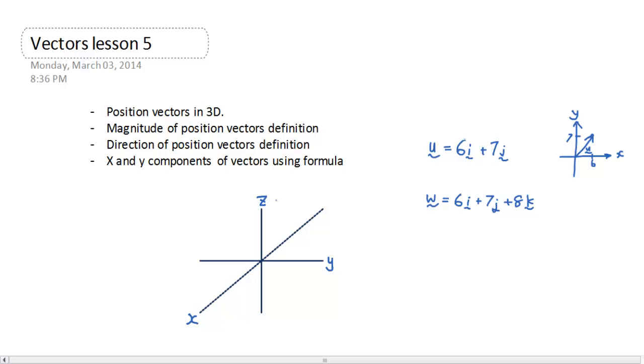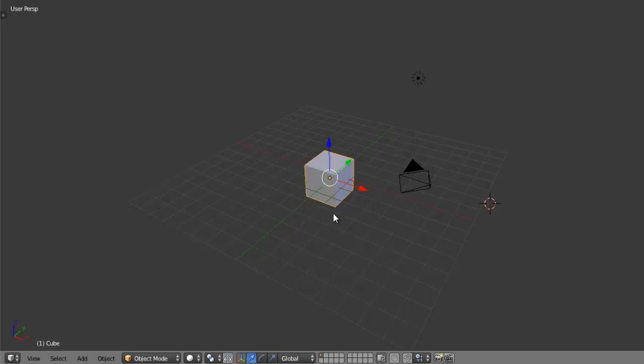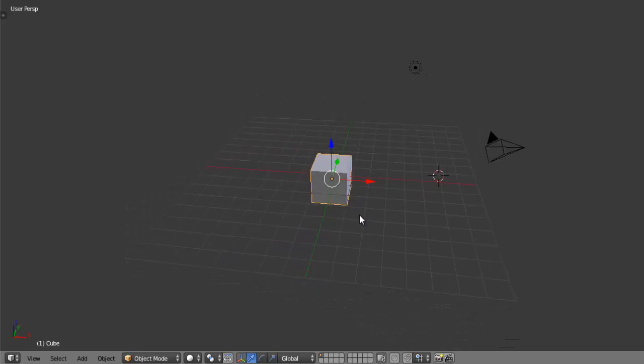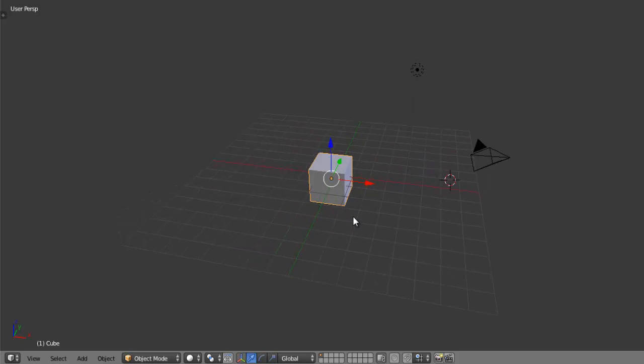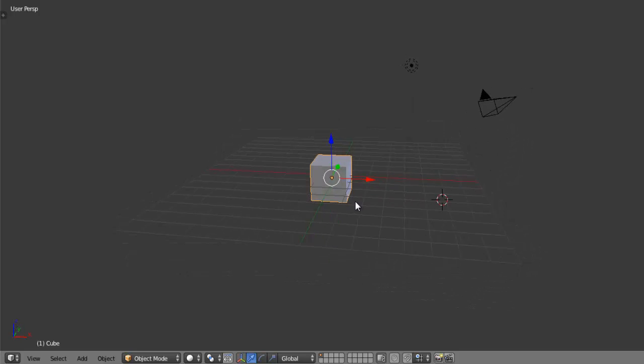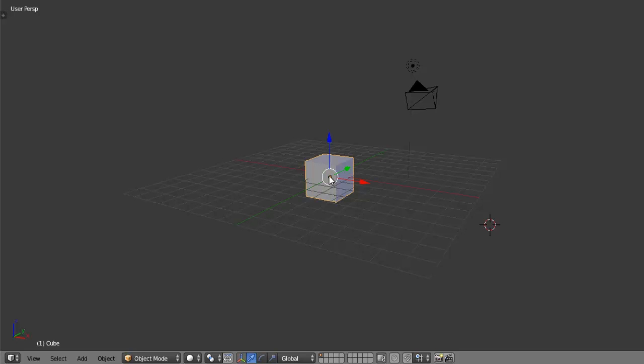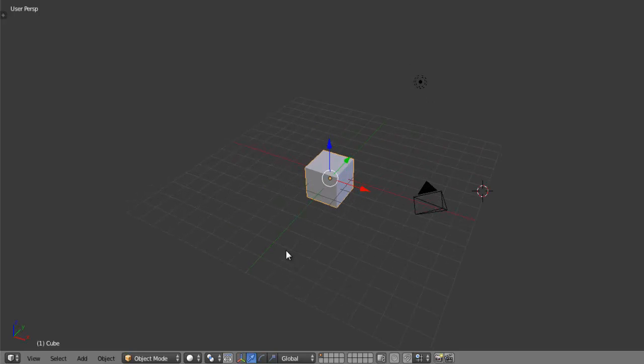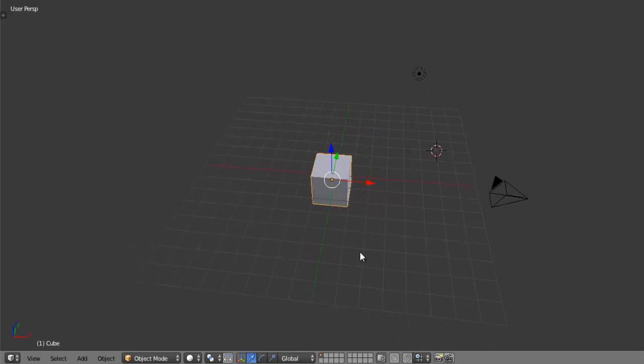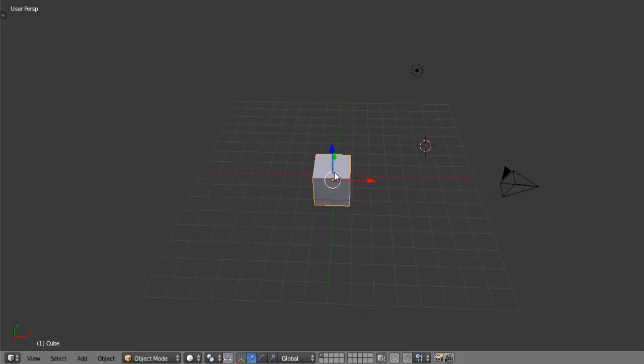So why do we do that? Well, let's go back to Blender for a second. And basically, this is exactly what we have, where we have the x-axis coming down the diagonal, the y-axis is horizontal, and the z-axis is vertical.